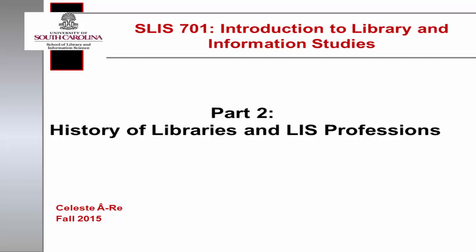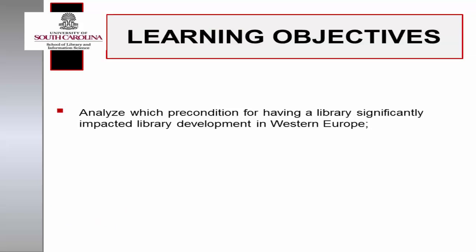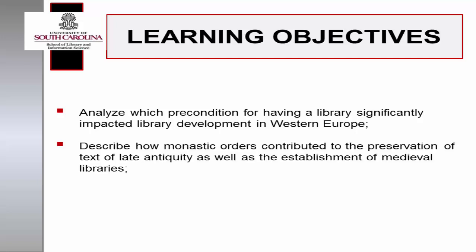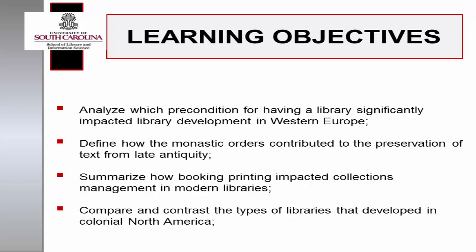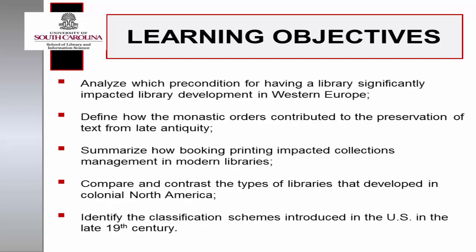By the end of this discussion, you will be able to analyze which preconditions for having a library significantly impacted library development in Western Europe; describe how monastic orders contributed to the preservation of text of late antiquity as well as the establishment of medieval libraries; summarize how the advent of the printing press impacted bibliographic control in modern libraries; compare and contrast the types of libraries that developed in colonial North America; and identify the classification schemes introduced in the United States in the late 19th century.